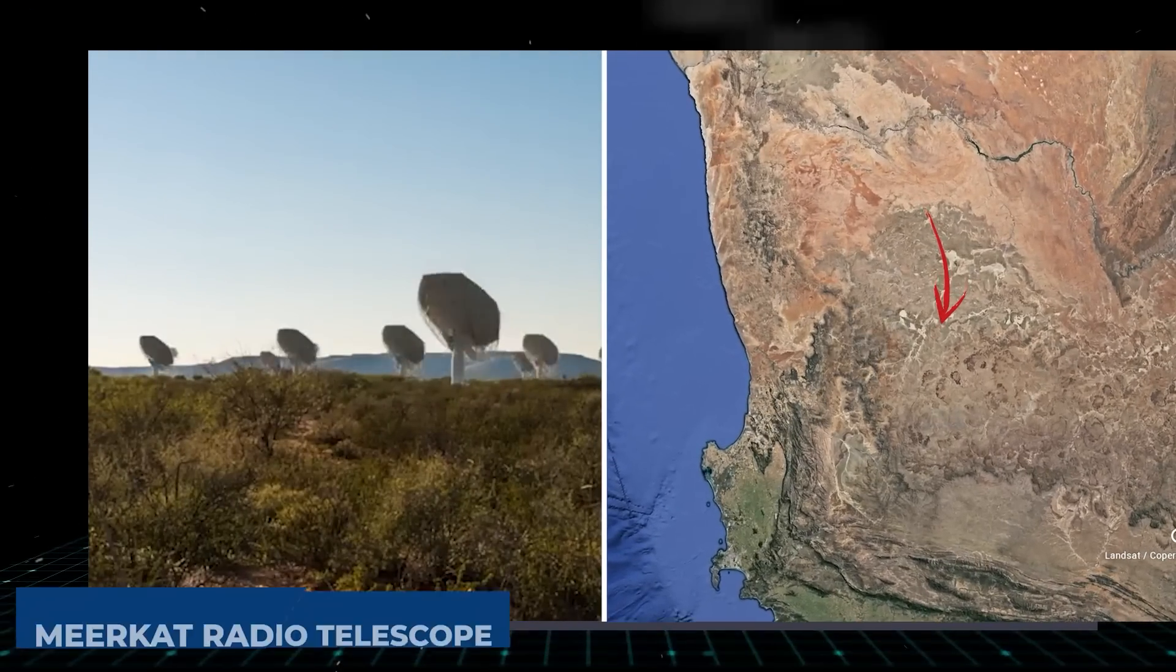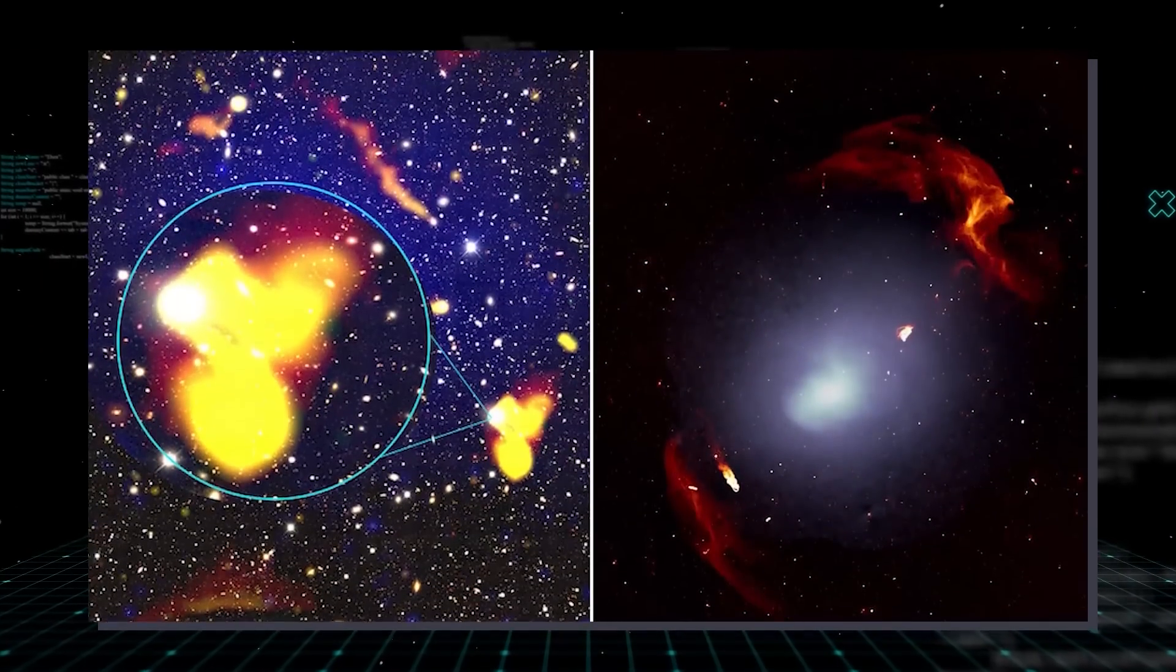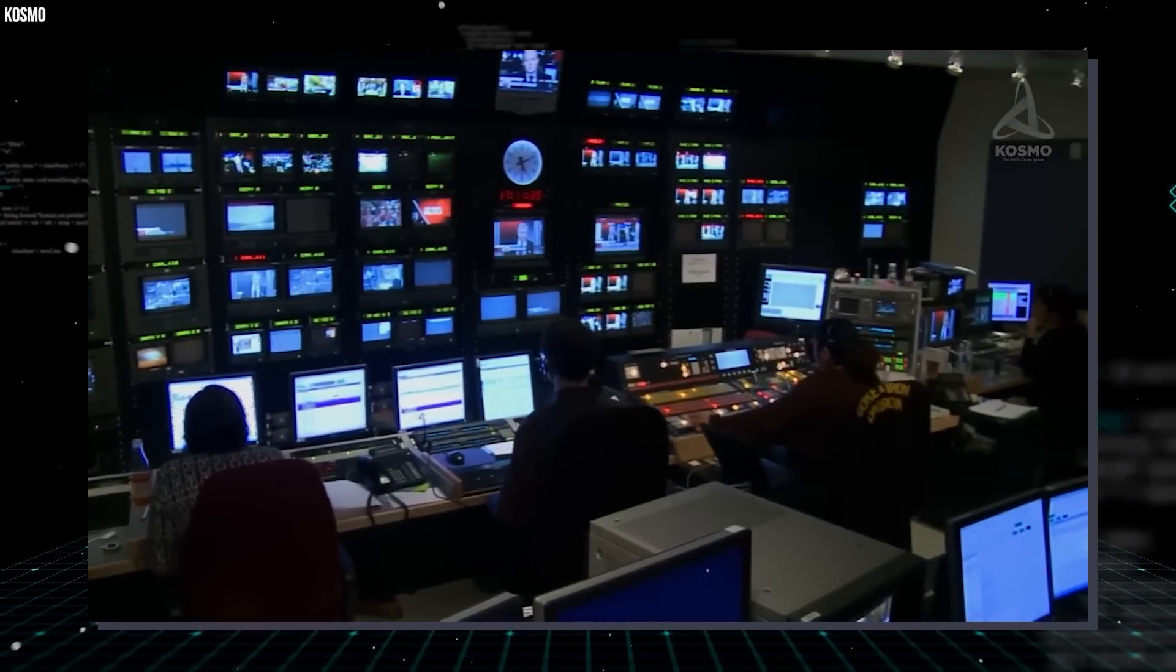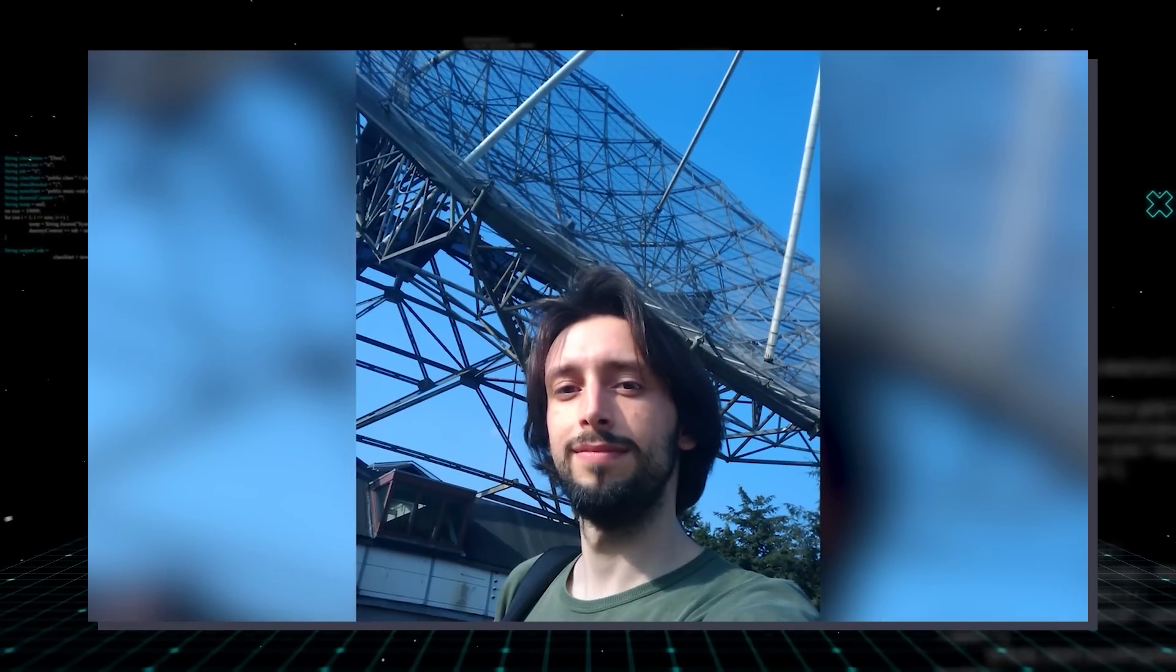Researchers used the Meerkat radio telescope array located in South Africa to visualize the radio relics of both halves of the shockwave. This study revealed that the structures are far more complex than experts previously believed.